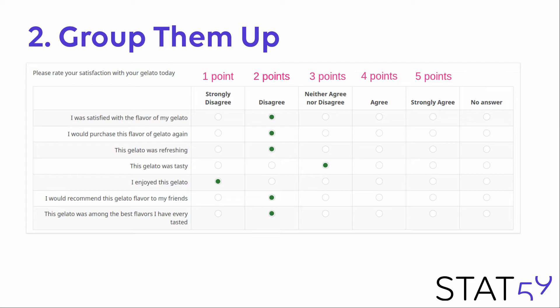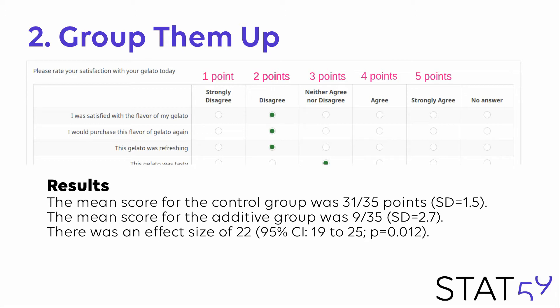When we add these up, we have seven questions of five points each, for a maximum score of 35. Because we have used groups of similar Likert response items, we know they are robust to the continuous assumption, and so we can take the mean — which is 31 out of 35 for the control group, 9 out of 35 for the additive group — with an effect size of 22 and a p-value of 0.012. By simply grouping up, groups of Likert response scale items are robust to the continuous assumption.